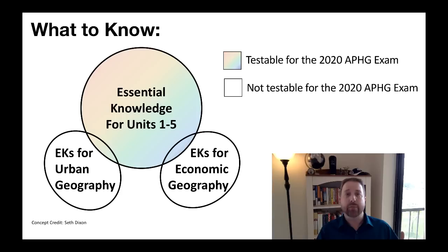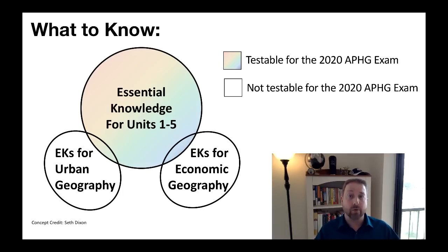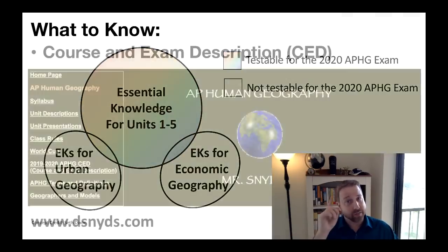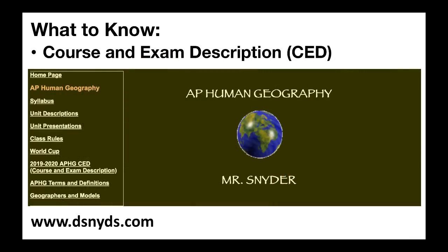Any term or concept not in the essential knowledge will not be the central focus of any part of your FRQs. The main parts of the FRQs will only focus on the essential knowledge — the EKs. Other ancillary information can, of course, be used to answer the question if applicable. You can go to my site, www.decenize.com, click on AP Human Geography, and find a concise PDF that's only 19 pages, free of charge. I also have a compendium of terms and definitions and a summary of key geographers and models.